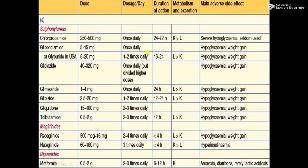Glibenclamide is dosed at 5 to 15 milligrams, given once daily, and similar to chlorpropamide, its adverse effects include hypoglycemia and weight gain. Gliclazide is available in 40 to 320 milligrams, given once daily but divided in higher doses depending on patient condition. The main adverse effects reported for gliclazide are hypoglycemia and fat gain.